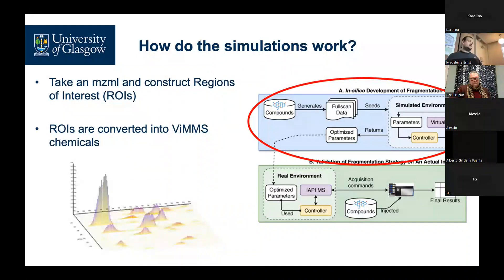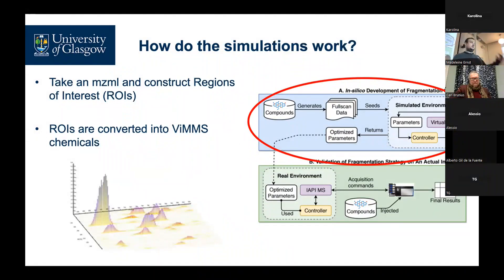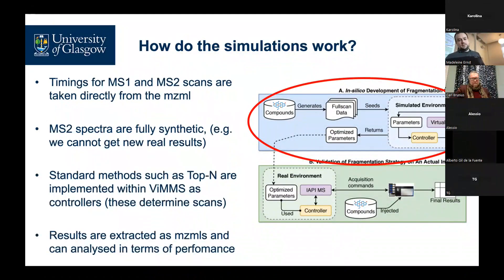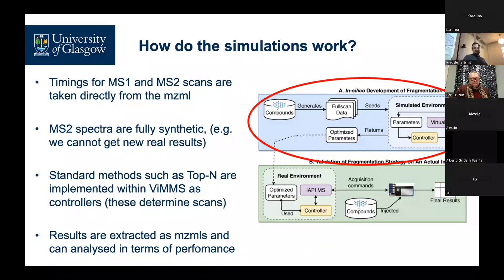For simulations, what we tend to do is take an existing mzML — potentially a full scan of a sample that's already been collected. We use beer generally because we're interested in methods rather than clinical outputs. We create regions of interest (ROIs) using standard ROI-building networks used within peak-picking tools, and convert these into VIMS chemicals, which we basically form into a virtual sample. We use the timings from the MS1s and MS2s from previous experiments and generate synthetic MS2 spectra — these aren't real at the current stage; you can populate them from a database, but we tend to generate them somewhat at random.